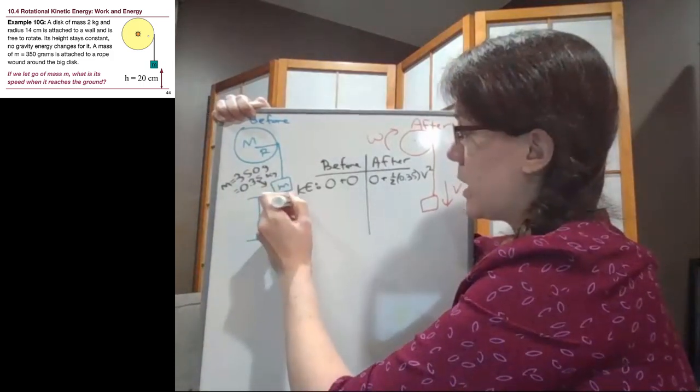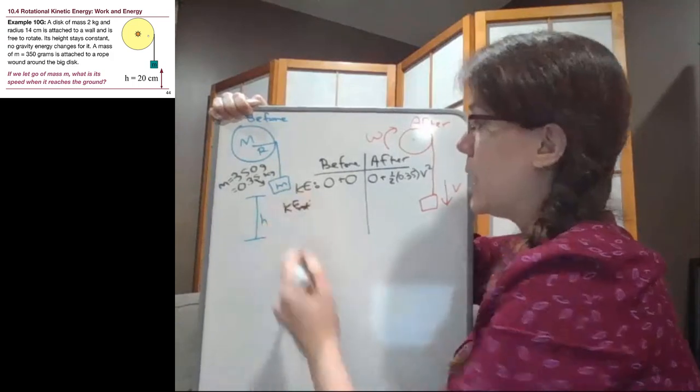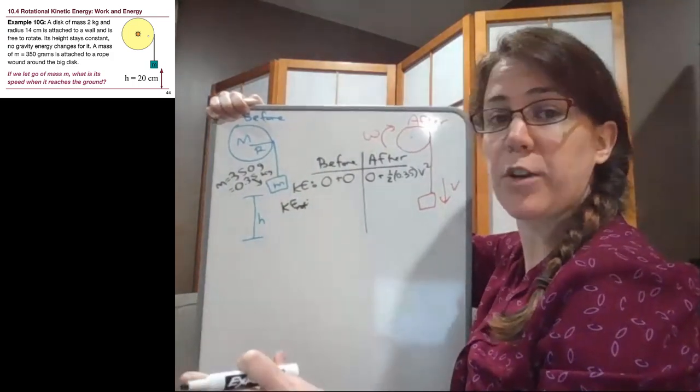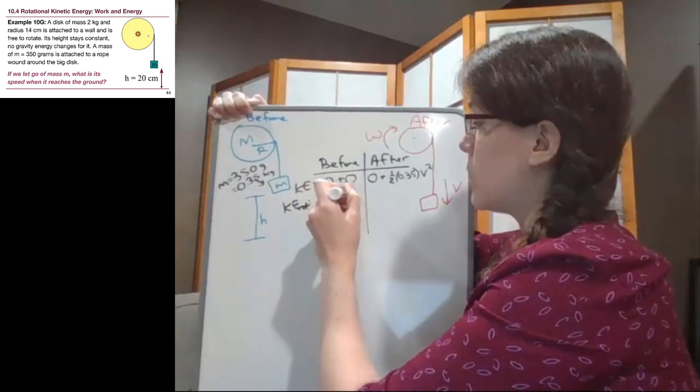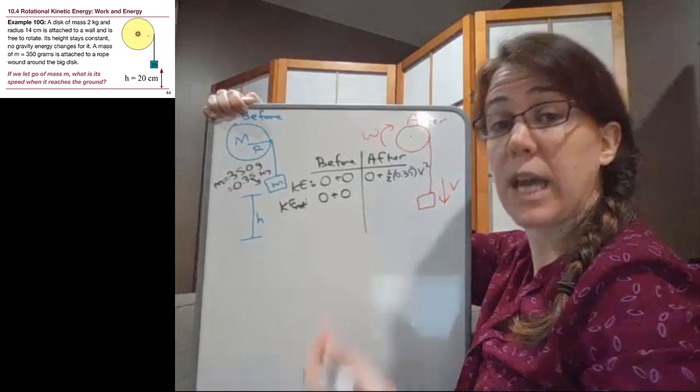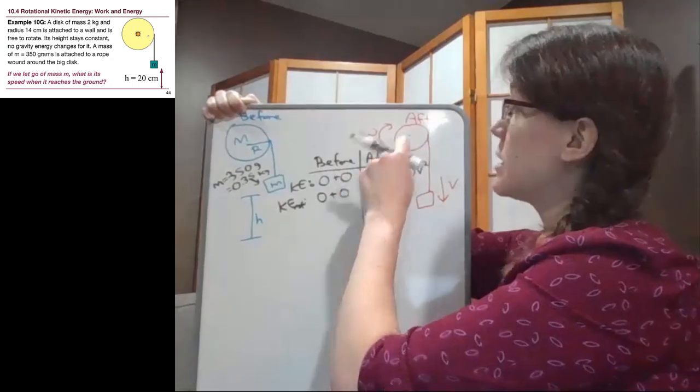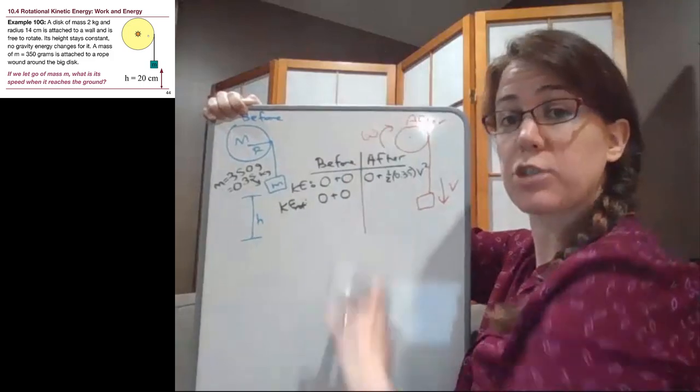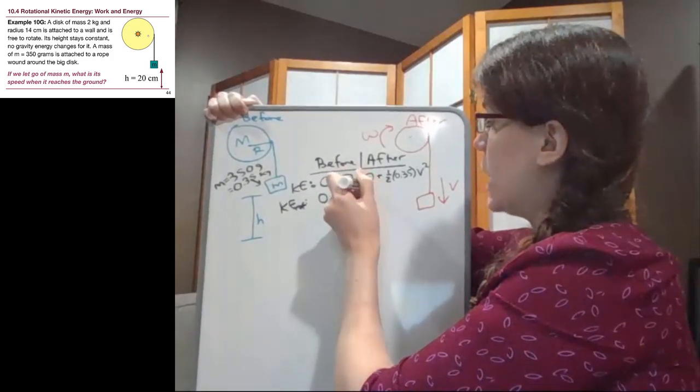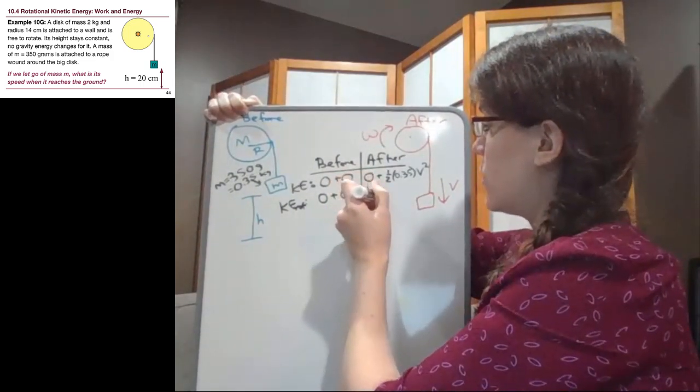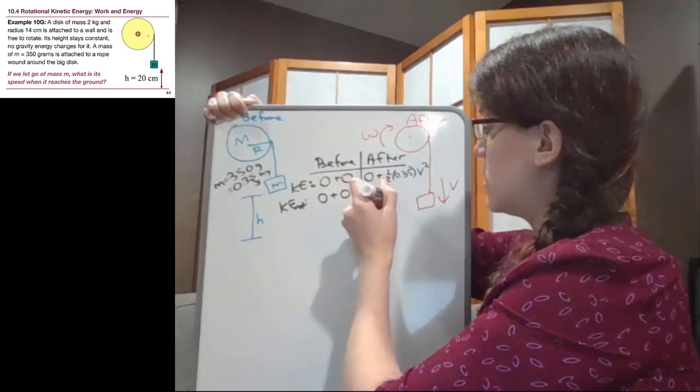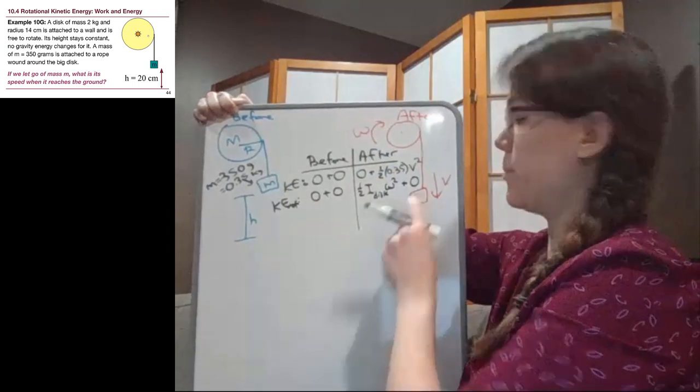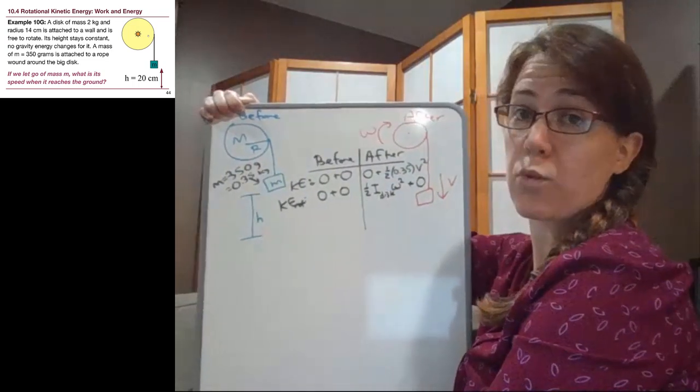The next question we can ask ourselves is, are we rotating? Again, at the start of the problem, nothing is having any kind of motion, so nothing is rotating at the start. At the end of the problem, this disk is rotating. This little mass is not spinning around, it is just dropping straight down. So we have one half I of the disk times omega squared plus 0 for the little mass that is not rotating.